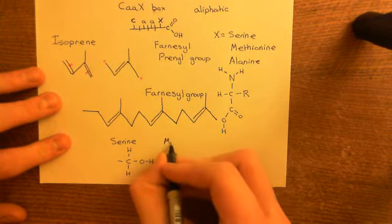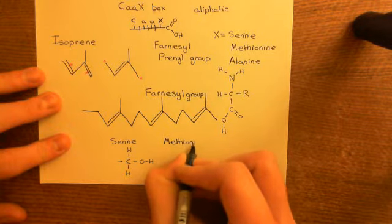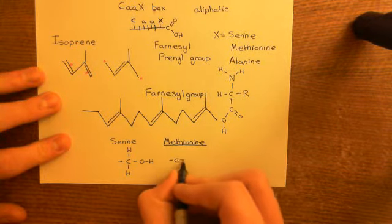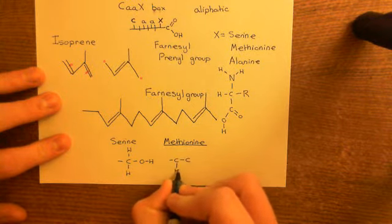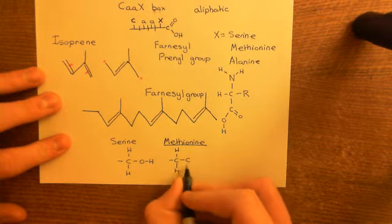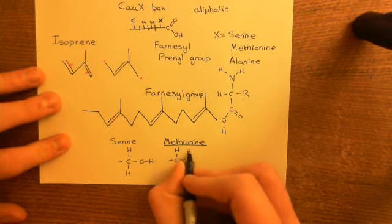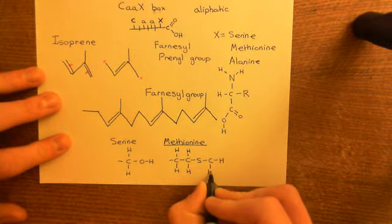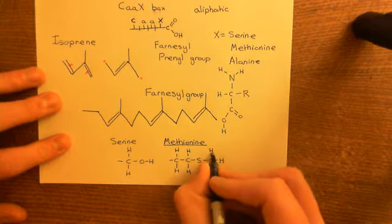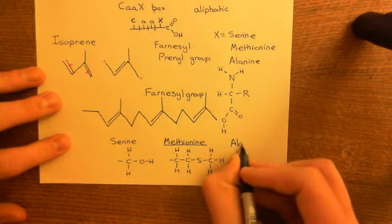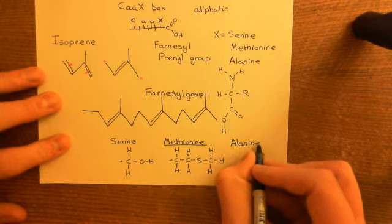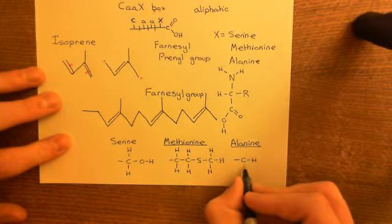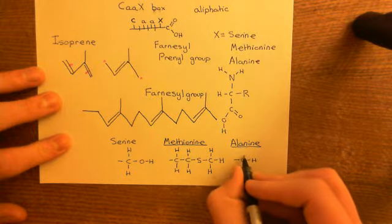In the case of serine, the R group is a methylene group with an alcohol group coming off it. The R group of methionine consists of two methylene groups — an ethylene group — and then a sulfur and then a methyl group on the other side. And then finally, the amino acid alanine — the R group is just a methyl group, so you just have a carbon with three hydrogens sticking off as the R group.